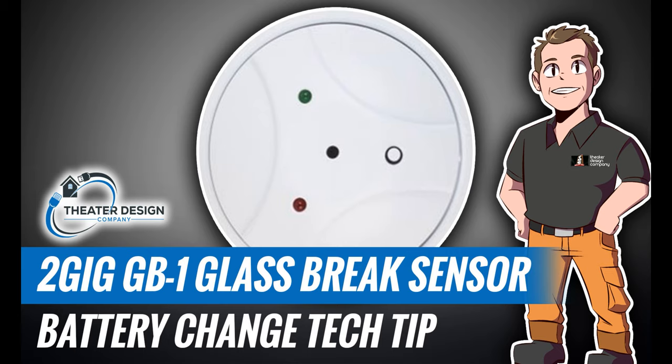Hey there, this is Tyler from Theater Design Company. I'm going to do a quick disclaimer here first. If you have a monitored alarm system or a self-monitor alarm system via alarm.com, you're going to want to make sure that your system is either in test mode or self-monitored. You will get a tamper alert when you pull the batteries out of most any 2GIG sensor.